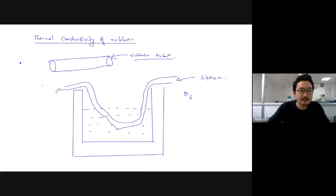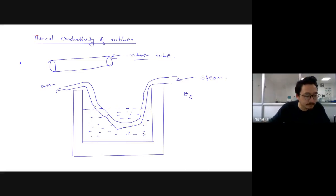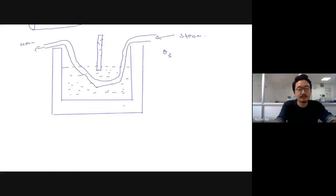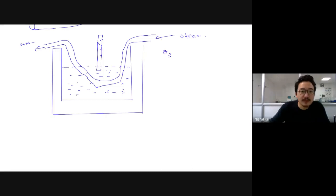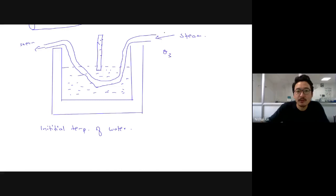You will blow steam from this side, and the steam will come out from the other side. This rubber will heat some of the water. You'll start noting the temperature using a thermometer. This is a very basic and simple experiment. First, you can note the initial temperature of the water.